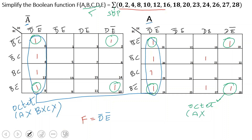Moving to the next grouping: B-bar C-bar and BC-bar — this row has B eliminated and C-bar is common. Looking at this column, D-bar E-bar and D E-bar — D is eliminated and E-bar is common.